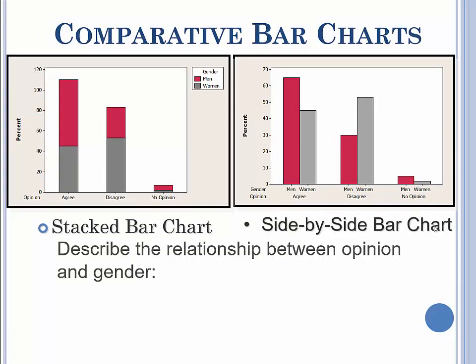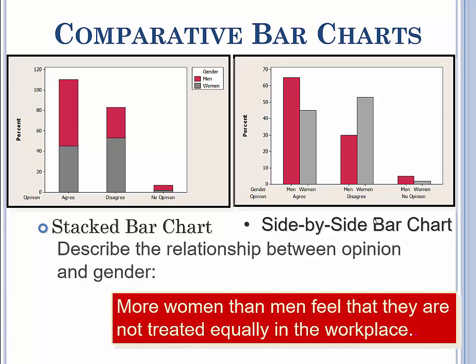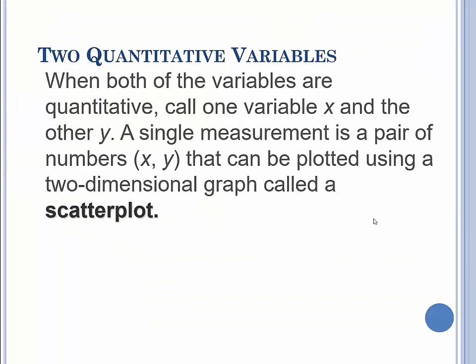Comparative bar charts. You can stack the things on top of them. I personally don't think these are as good as the pie charts, but these are used a lot. The idea is that the first gray bar is the women's responses, and then the red bar is the men's. So you can kind of see how the groups are going. And then the side by side bar chart does the same thing. I think side by side is better than stacked, but it's personal preference. You can tell from both that more women than men feel that they are not treated equally in the workplace.